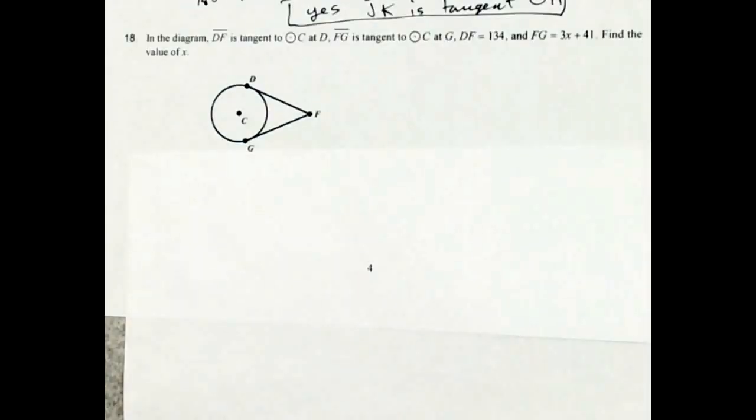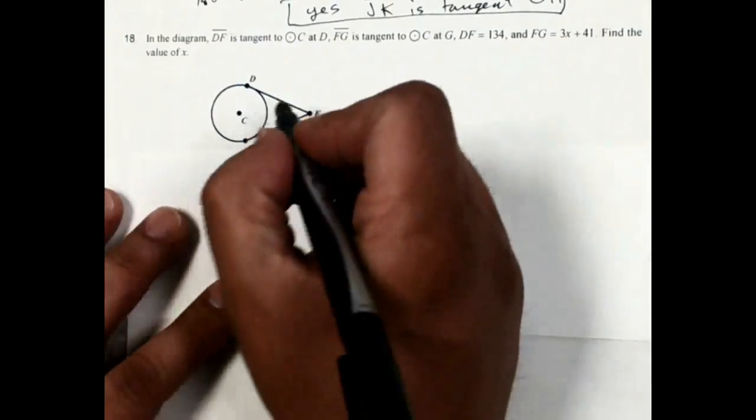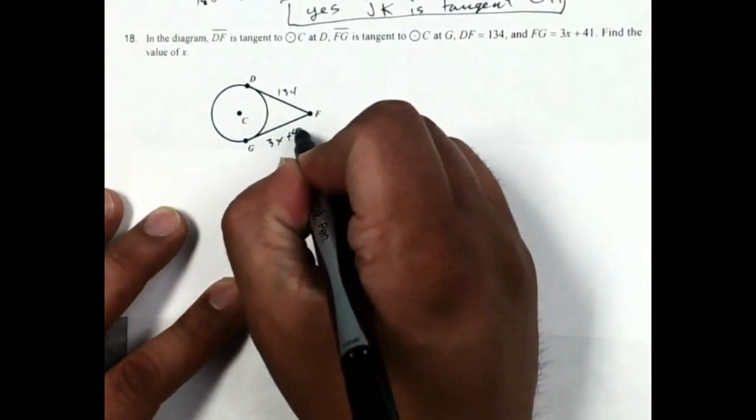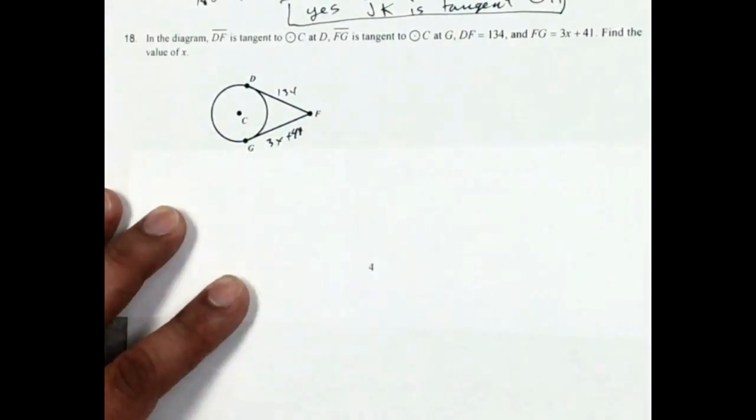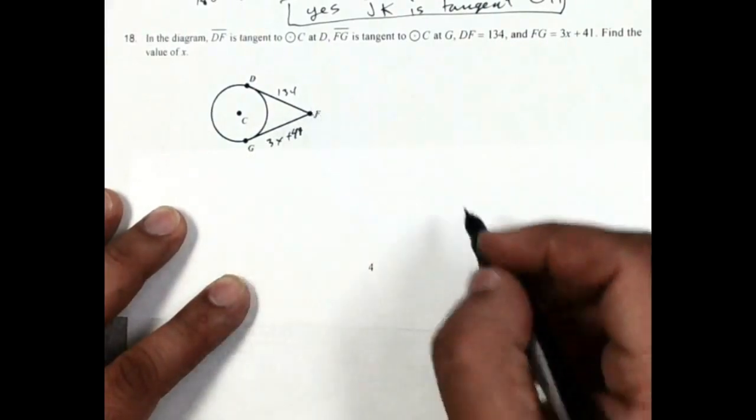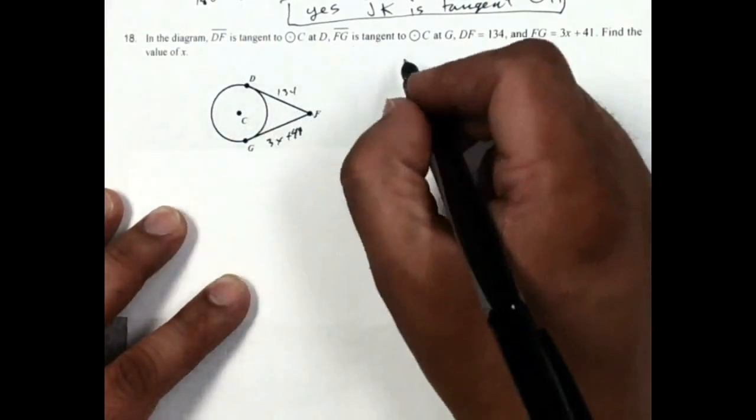All right, number 18 in the diagram, DF is tangent to circle C at point D, and segment FG is tangent to circle C at point G. DF is equal to 134, and FG is 3x plus 41. Find the value of x. Since they both meet or they intersect at this point F, that means that these two tangents are equal to each other.